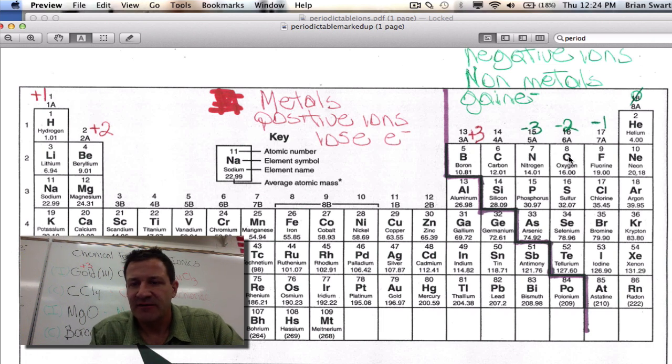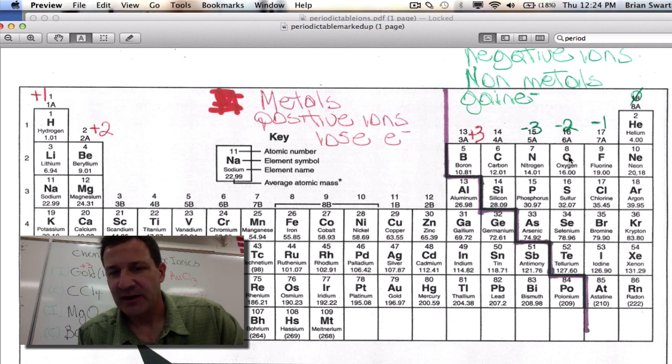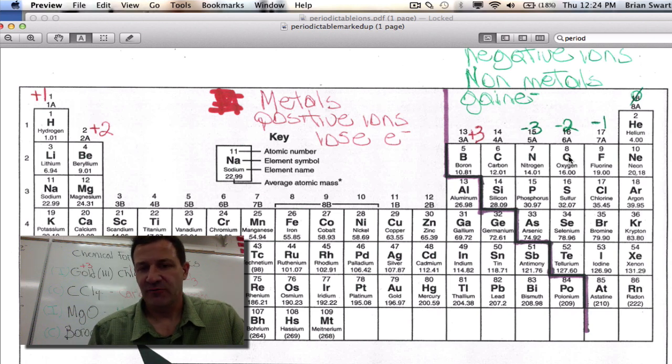And then for 15, 16, and 17, it's minus 3, minus 2, minus 1, whether they're gaining or losing electrons to fill their outer shells and get noble gas electron configuration, which is why they form bonds in the first place.